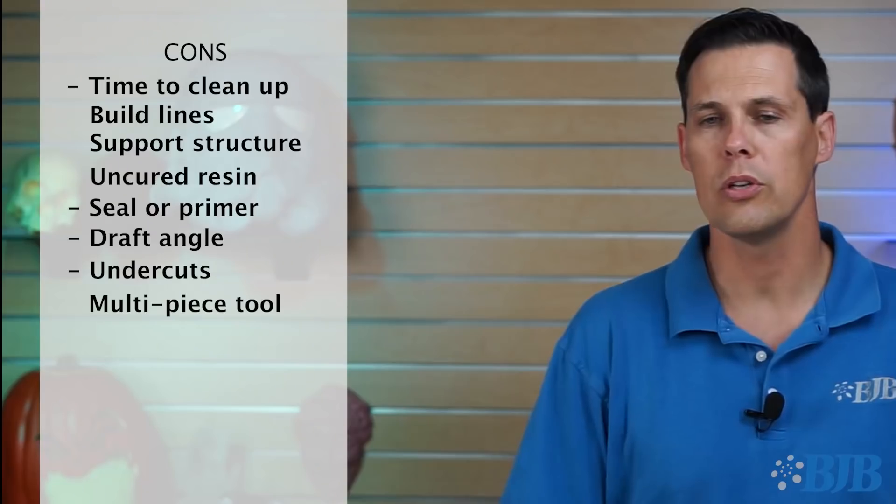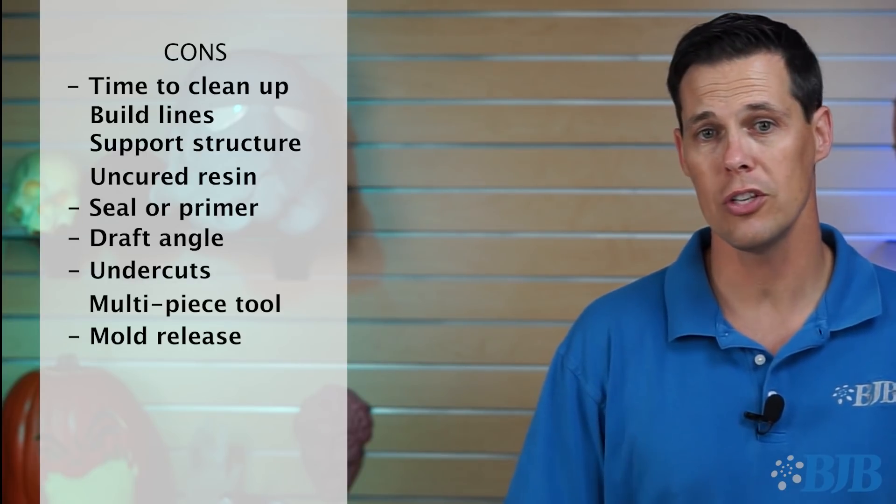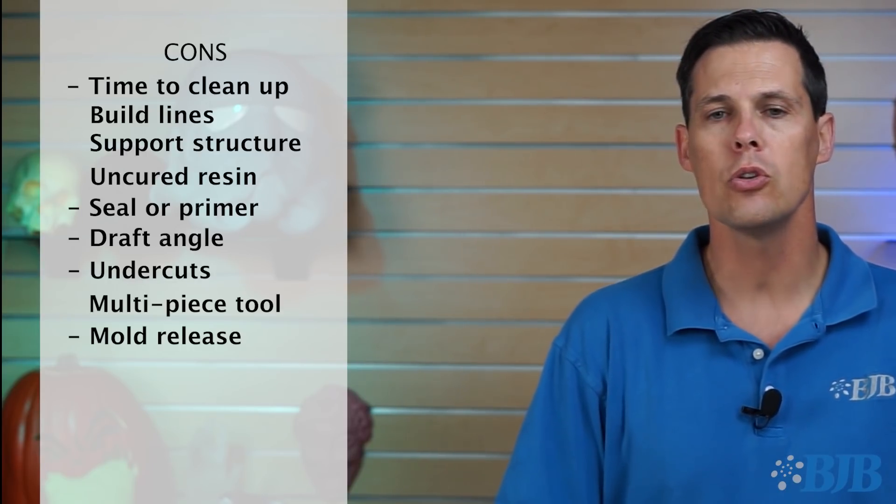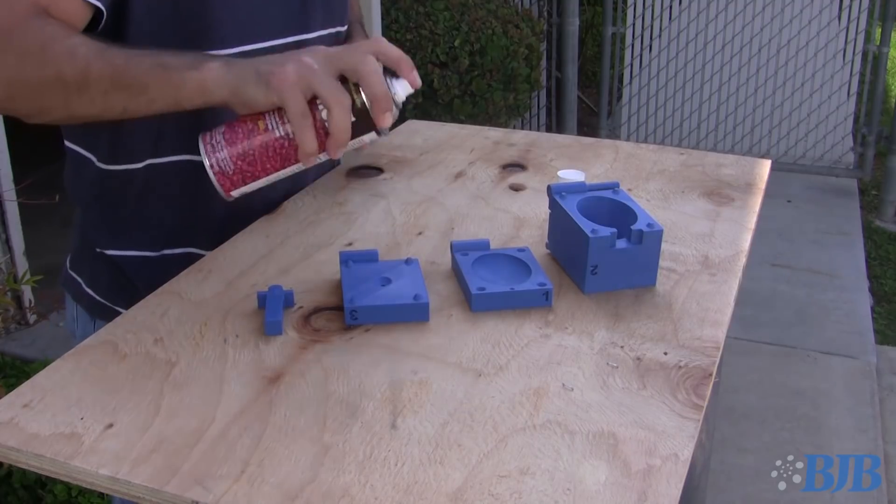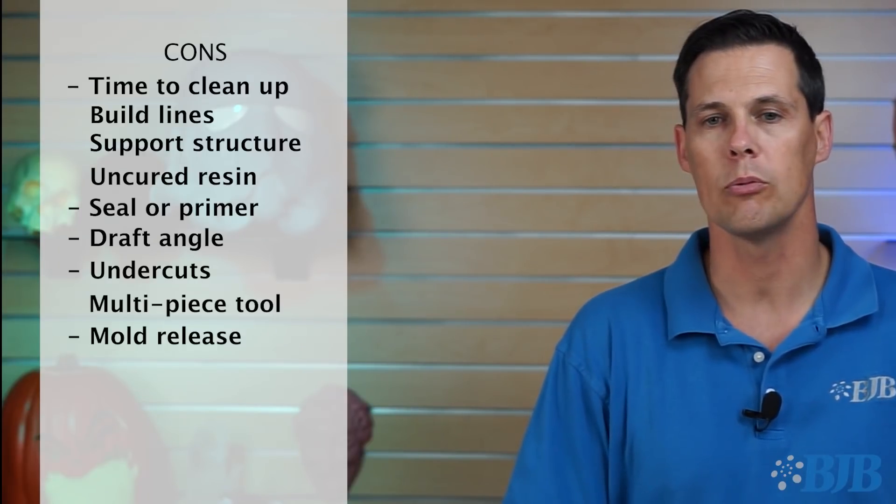And finally mold release. Cast materials like urethane and epoxy exhibit great adhesion properties just when you don't want them to stick. So you need to apply lots of mold release if you plan to get that cast thing out of the mold. We go through mold release strategies in the quadcopter mold video.